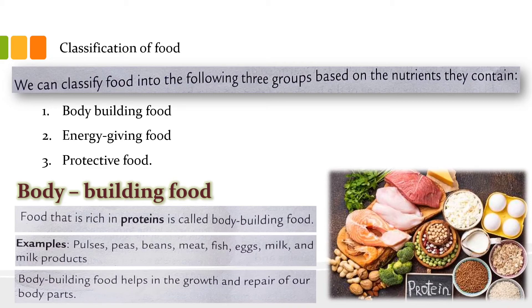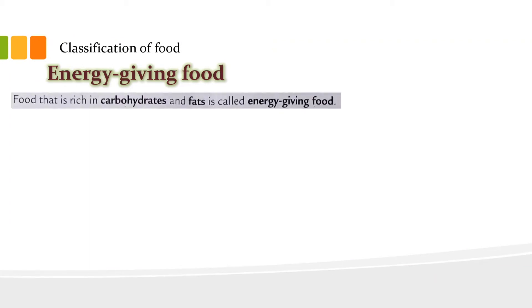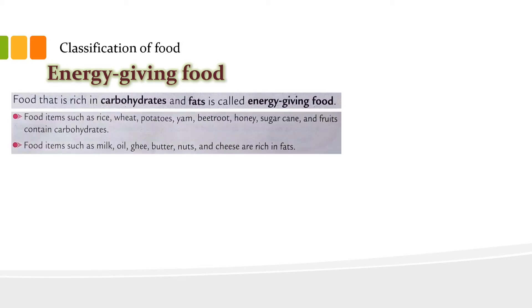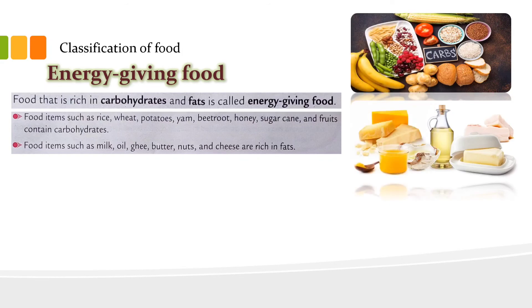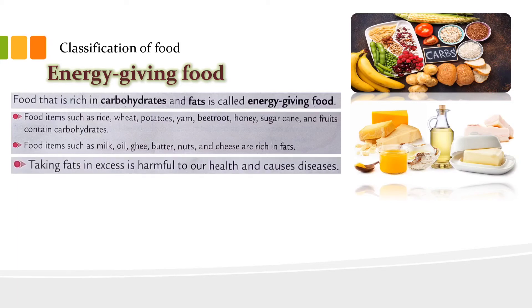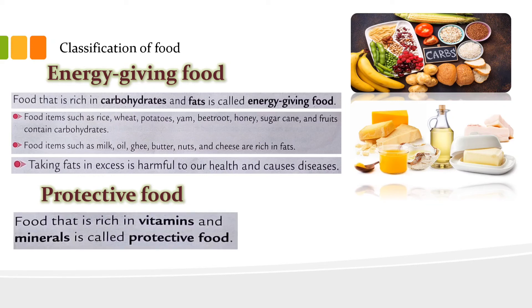Next is energy-giving food. Food that is rich in carbohydrates and fats is called energy-giving food. Carbohydrate-rich items include rice, wheat, potato, yam, beetroot, honey, sugarcane, and fruits. Fat-rich items include milk, oil, ghee, butter, nuts, and cheese. However, we should not take an excess amount of fat because it can cause diseases and excessive fat is harmful for our health.